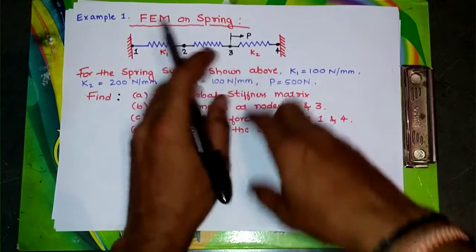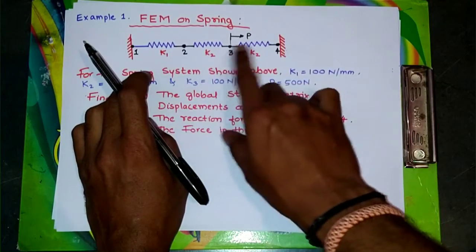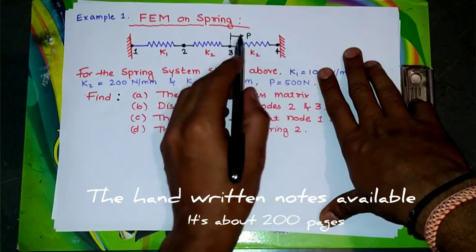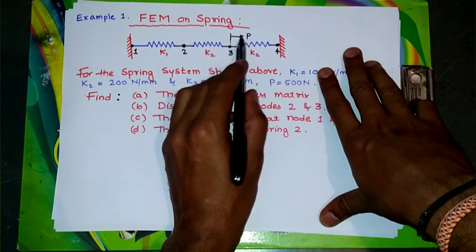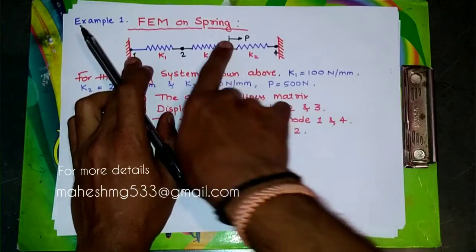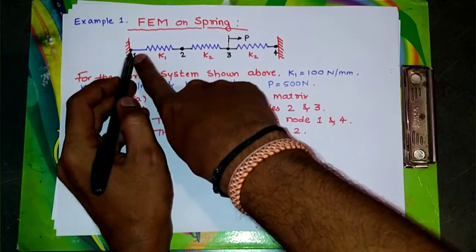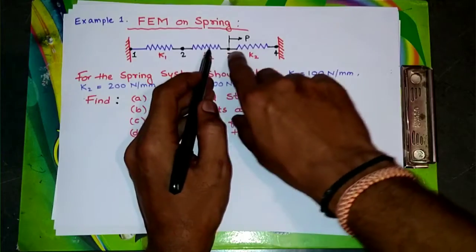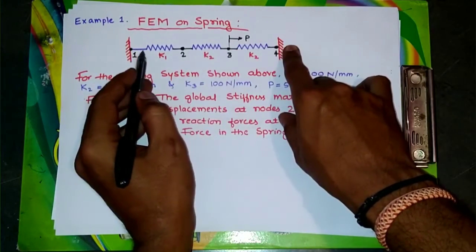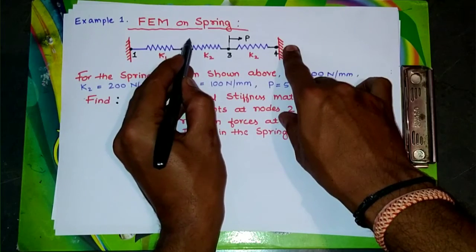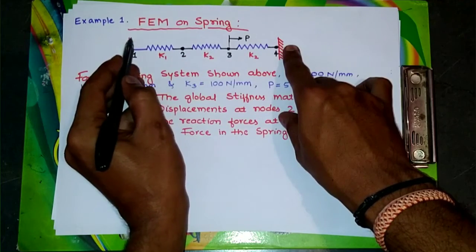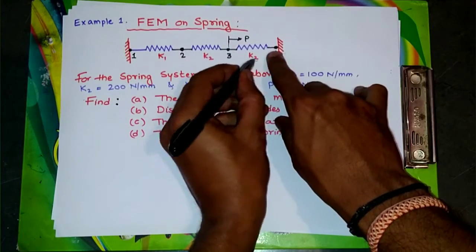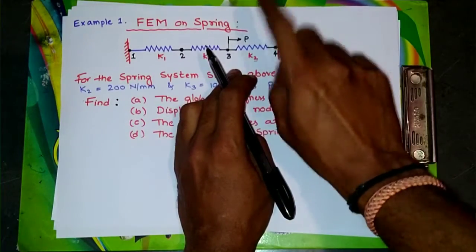k1, k2, k3 are the stiffness values for the spring elements. At node 3 there is a force applied towards node 4. When you apply the load at node 3, we can find the displacement at nodes 1, 2, and 3. The deformation at nodes 1 and 2 will be tensile — positive deformation — whereas at k3 the deformation is under compression, giving a negative deformation.